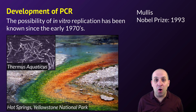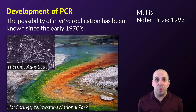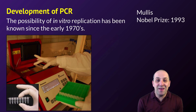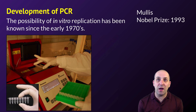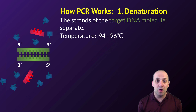Everything happens in tiny little tubes put into a thermal cycler, which quickly cycles through three different temperatures for the three different steps of PCR. It was understood from the 1970s that it was theoretically possible to carry out DNA replication in a test tube, but it wasn't until the 1980s that it became commercially viable.